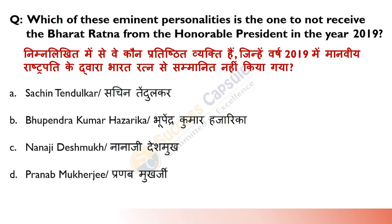Which of these eminent personalities did not receive the Bharat Ratna from the President in 2019? Answer is A — Sachin Tendulkar. It is not that Sachin Tendulkar didn't receive Bharat Ratna — he received it in 2014. He was the first sportsperson and youngest person to be awarded the Bharat Ratna.